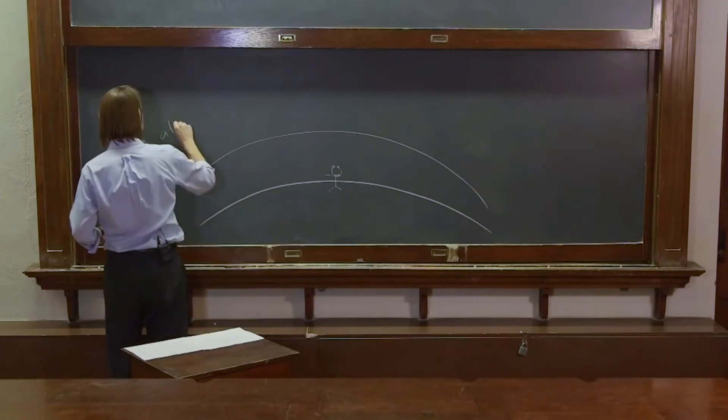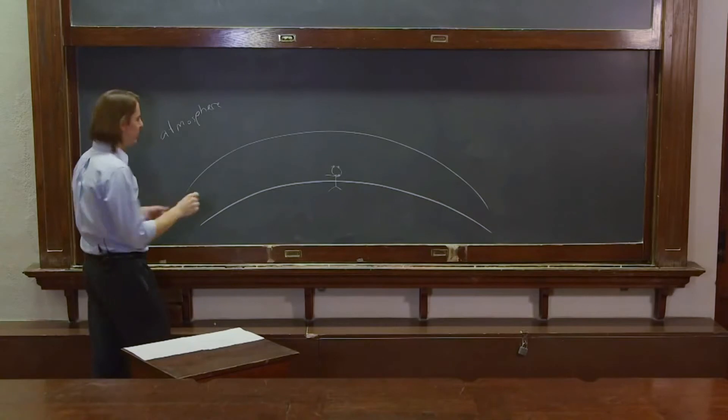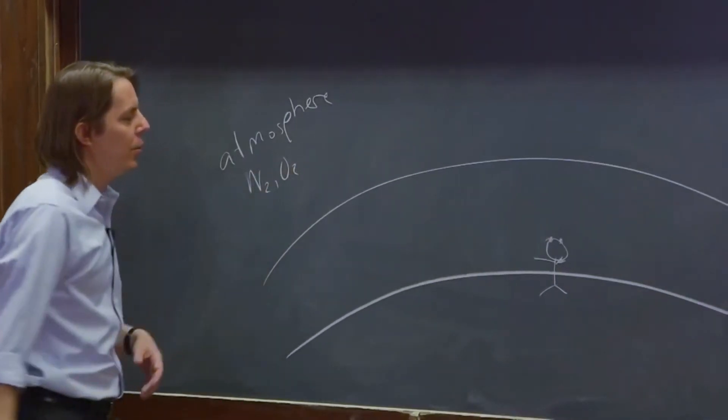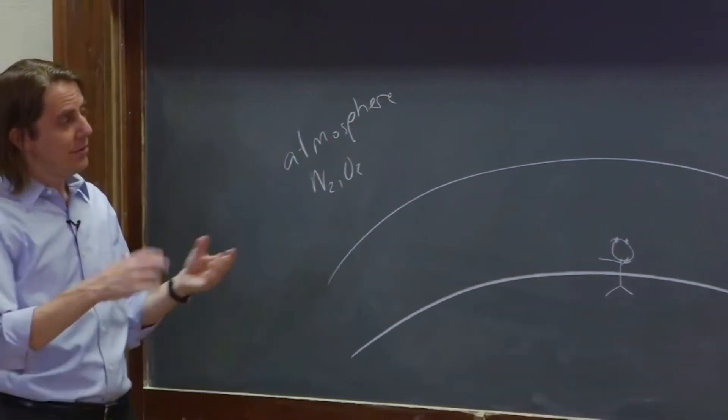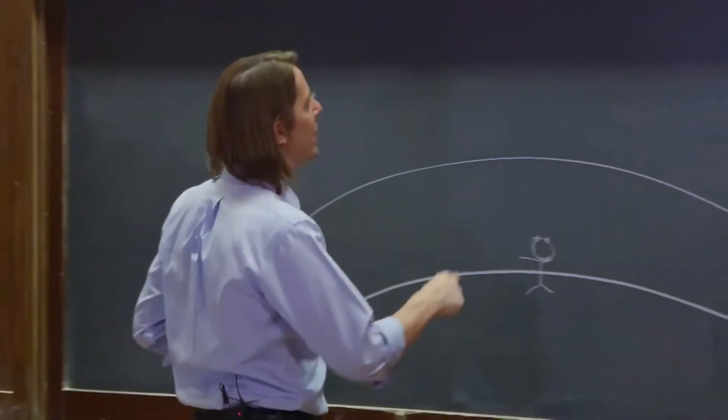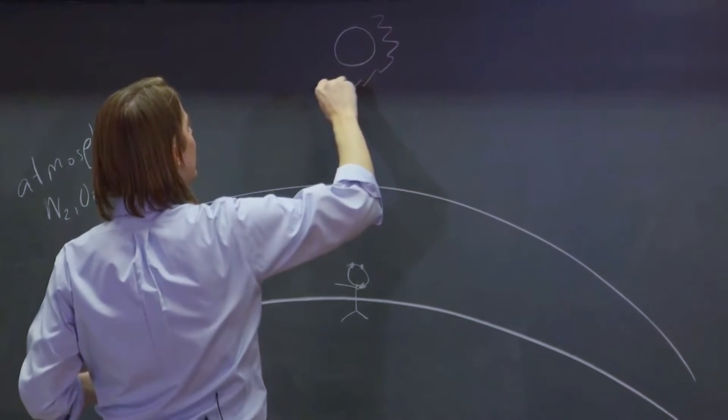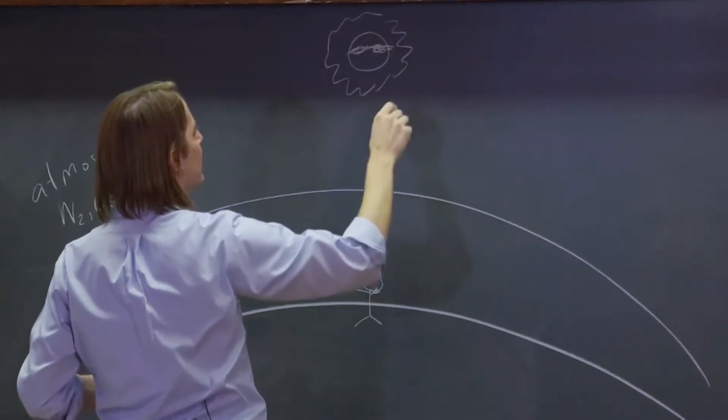So the atmosphere has lots of molecules in it, right? N2 mostly, and O2, little molecules that act as dipole scatters. The light hits them, the electrons oscillate. It does exactly what we described in the previous board. So our source of light is the sun, and the sun, my sun, always wears sunglasses. We haven't figured that out yet. There's my sun.